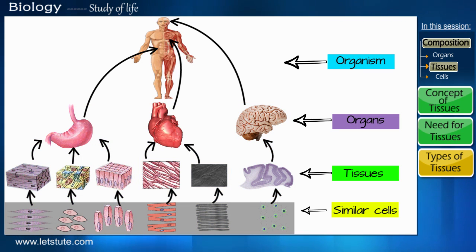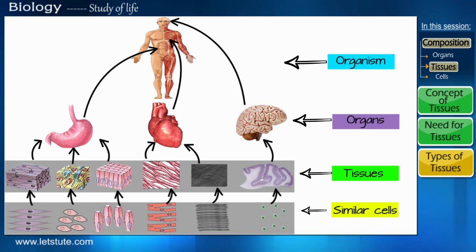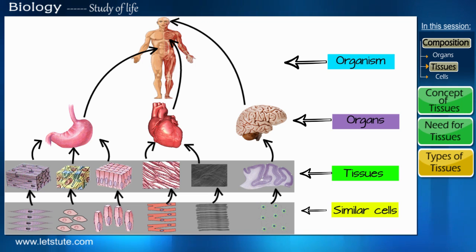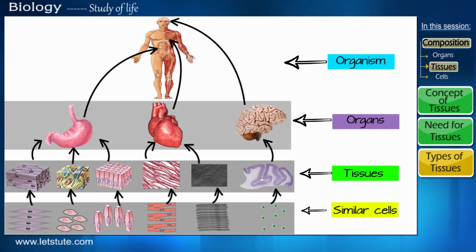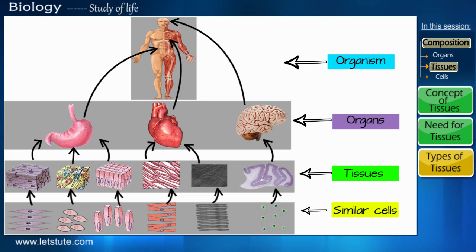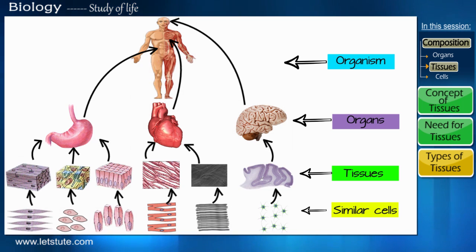To sum it up, it is the grouping of cells with identical functions that form tissues, which perform the same function efficiently, and which in turn come together to form specific organs based on the activities carried out by an organism.